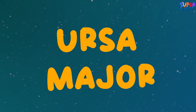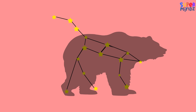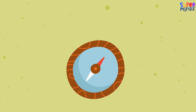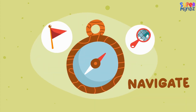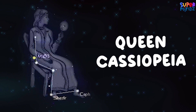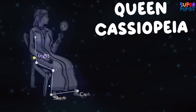Ursa Major, also known as the Great Bear, is a constellation that contains the well-known asterism the Big Dipper. In ancient times, people used the stars to navigate.